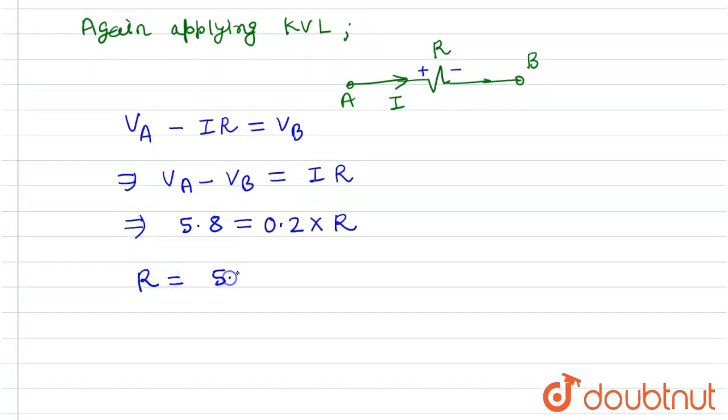So the magnitude of external resistance will be 5.8 upon 0.2, that means 29 ohm. This is the answer of this problem, so the resistance will be 29 ohm.